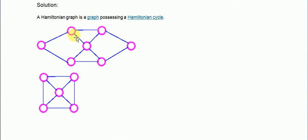For example, if we start from this particular vertex, we have to visit each vertex exactly once and follow all the vertices. We traverse: 1, 2, 3, 4, 5, 6, 7. We have covered all the vertices, traversing each vertex exactly once. So this particular graph is a Hamiltonian graph.